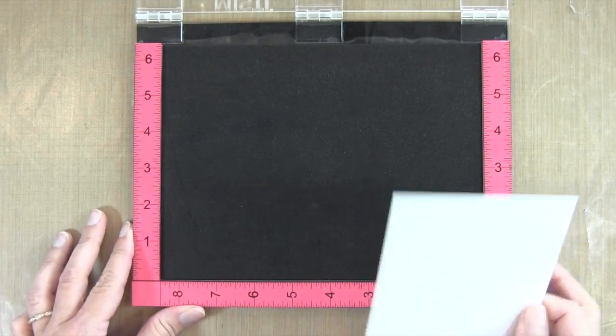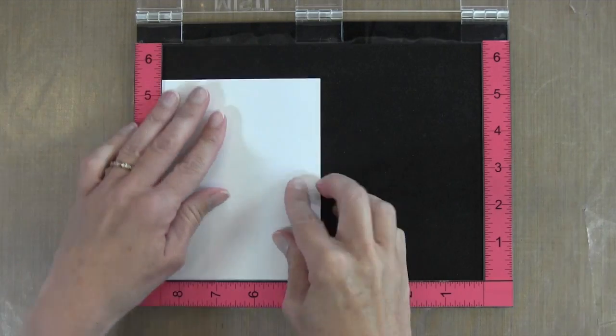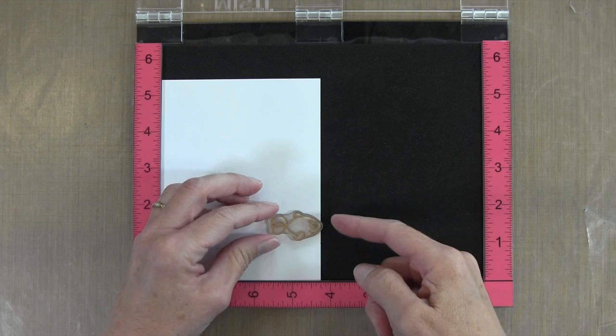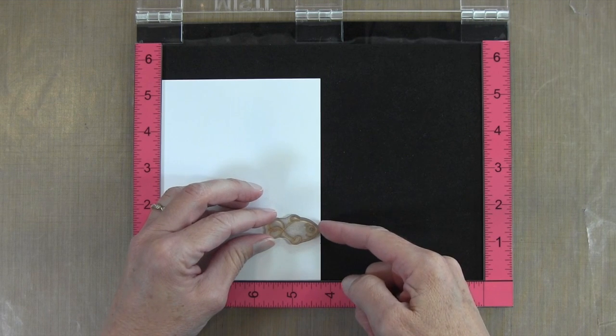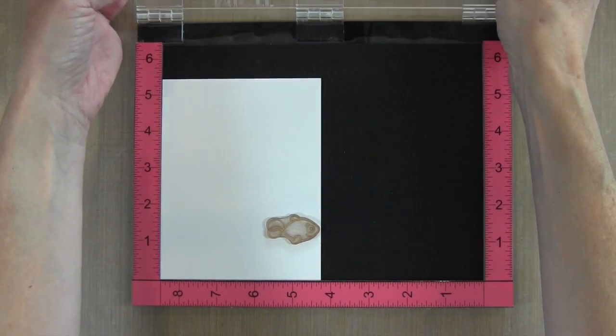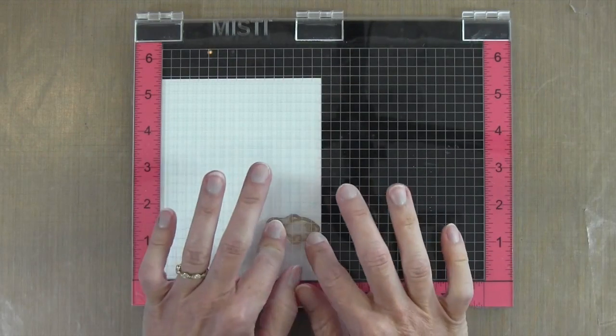I'm going to start with stamping the fish. I'll place my MISTI in the landscape position and put my Neenah cardstock in the lower left hand corner and position my first fish as far to the right as I can. That's going to be my first stamp.